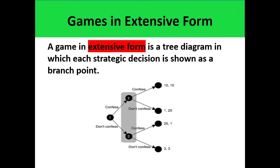In this example diagram, notice that the leftmost node is labeled with the number 1. This means it is player 1's turn to make a decision. After making a decision, it is player 2's turn to make his or her decision. Notice that in the last part of the tree, there are ordered pairs.